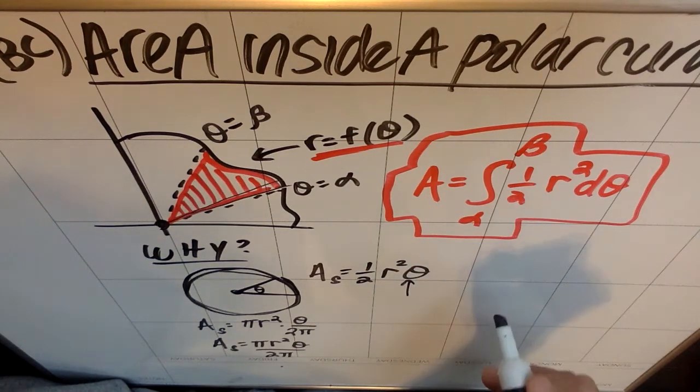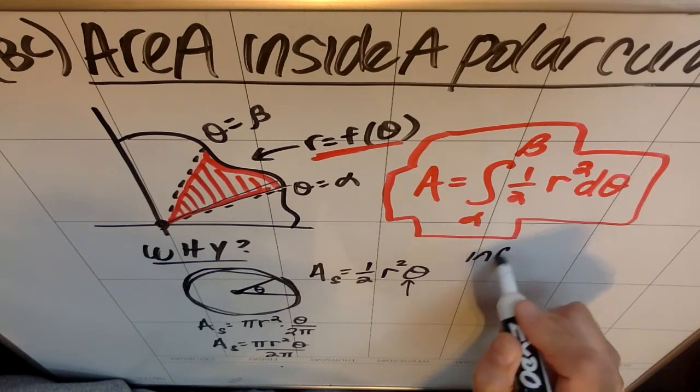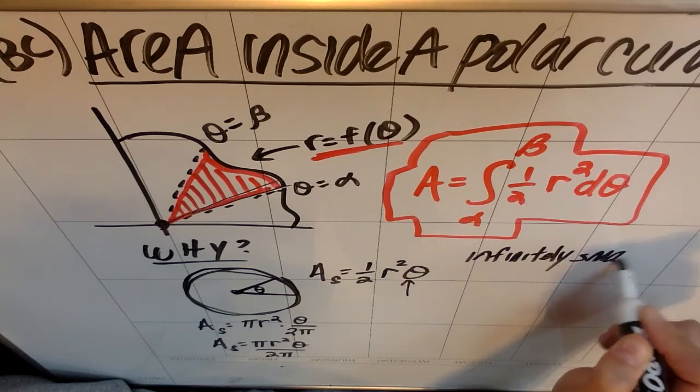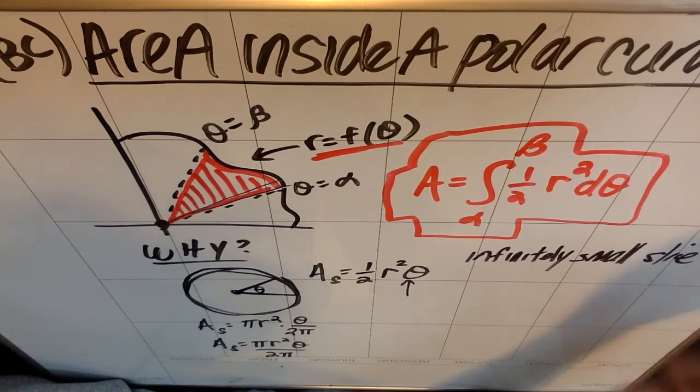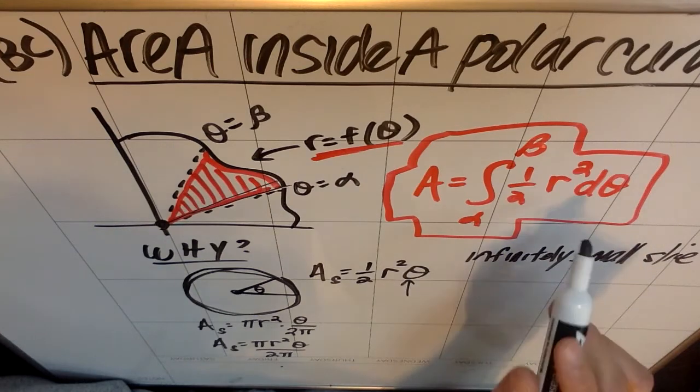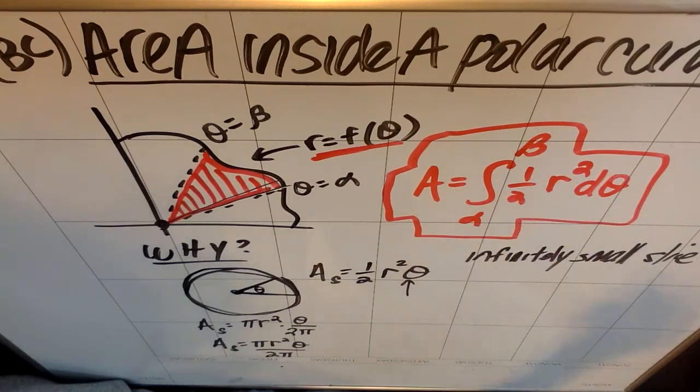Instead of treating this as a theta, the area of one of these really, really tiny sectors, the area of the infinitely small slice that I'm looking at, doesn't have a giant theta. What it has instead of a really big angle is a tiny, tiny, infinitesimally small angle that we're going to call d theta.